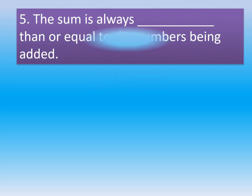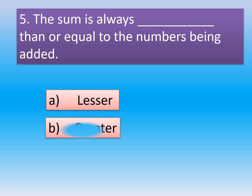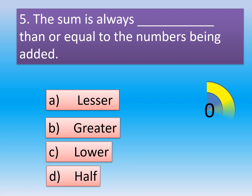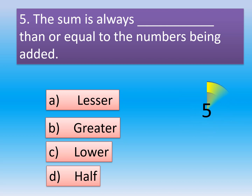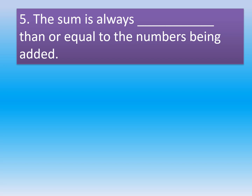Question 5: The sum is always dash than or equal to the numbers being added. Option A: Lesser. Option B: Greater. Option C: Lower. Option D: Half. The correct answer is Option B, Greater. The sum is always greater than or equal to the numbers being added.